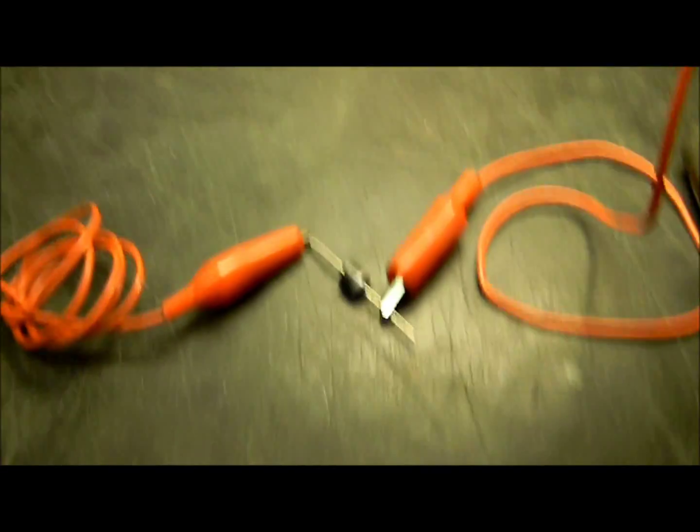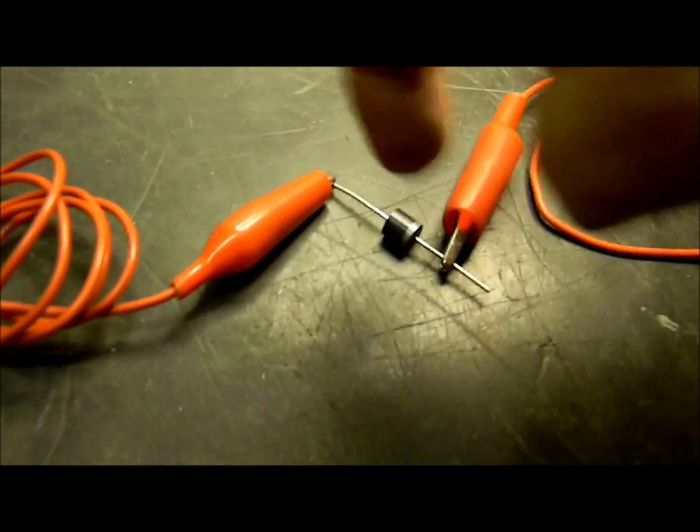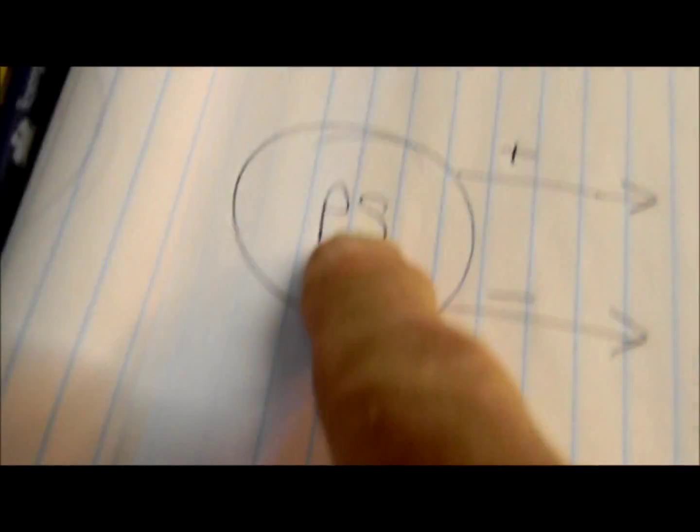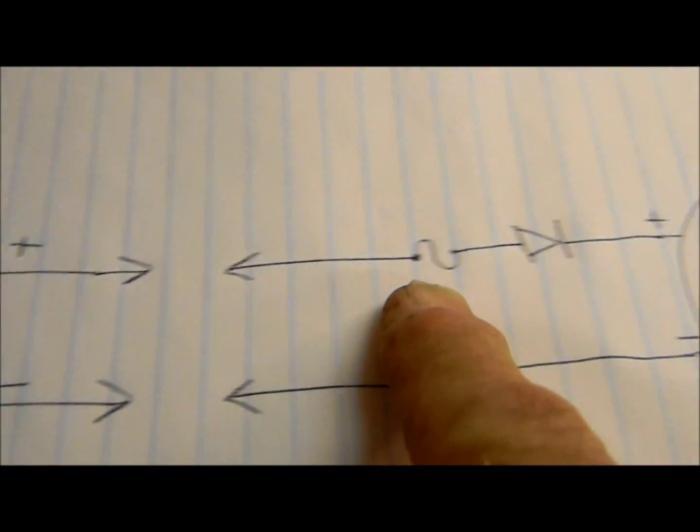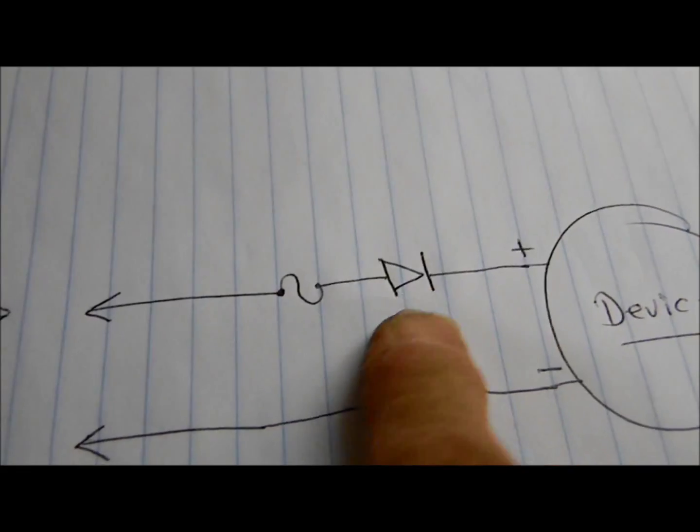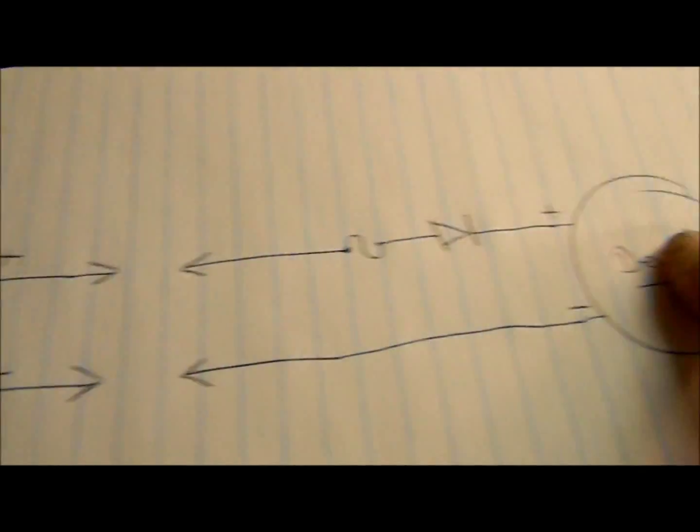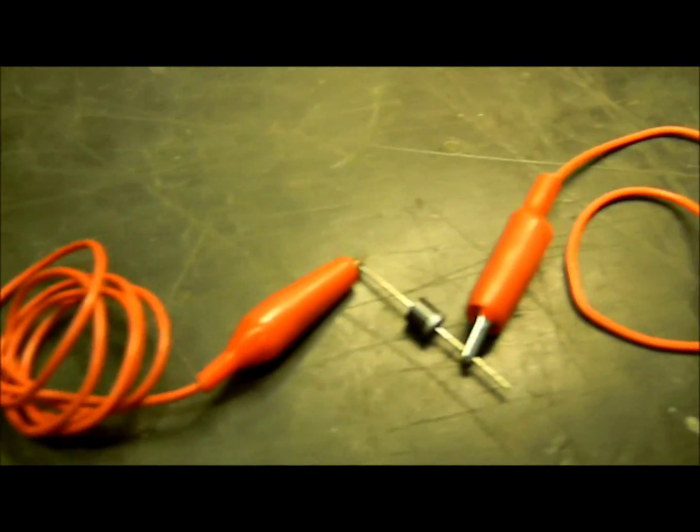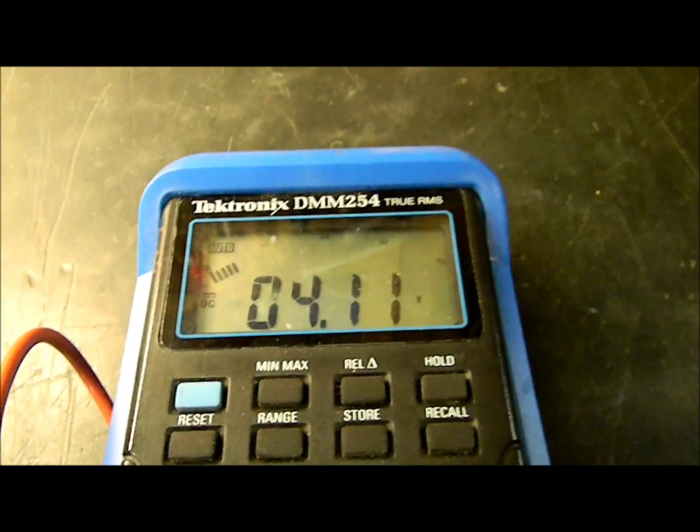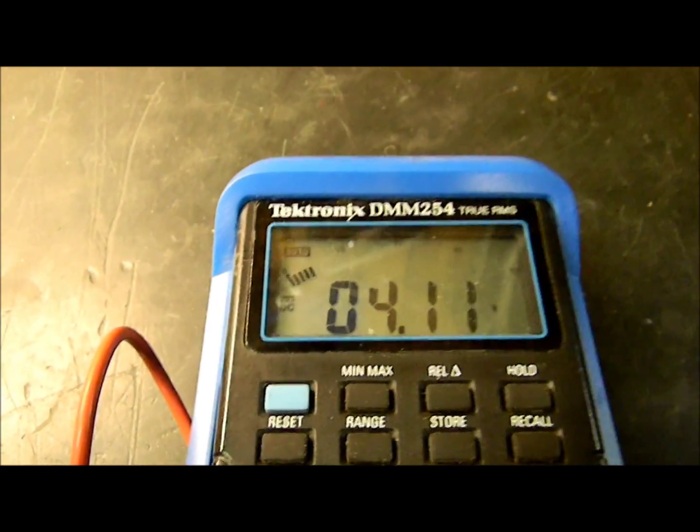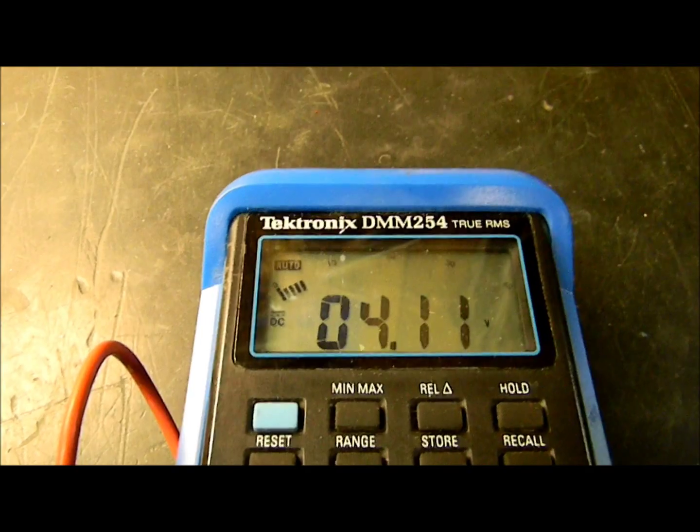Whereas we had 4.8 volts, see how the diode is pointing this way? Here's our power supply, here's our fuse, and here's our diode pointing this way to plus going into our device. With the diode inserted, instead of 4.8 we have 4.1 because you get about a 0.7-volt drop across a diode.